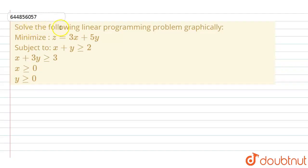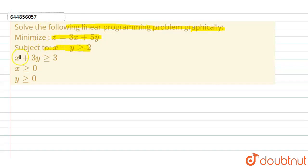One question is: solve the following linear programming problem graphically. Minimize z equals 3x plus 5y, subject to x plus y greater than or equal to 2, x plus 3y greater than or equal to 3, x greater than or equal to 0, y greater than or equal to 0.